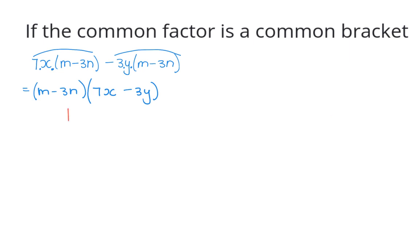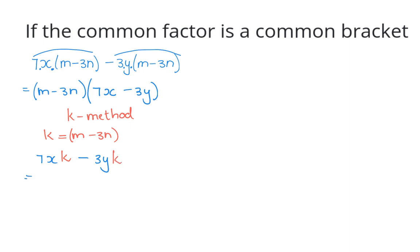Some people use the k method to simplify the work — they replace the bracket with the letter k. So k equals the bracket m minus 3n, and then you replace the bracket with k, giving 7x times k minus 3y times k. You can see that k is the common factor in each term, so you write k times 7x minus 3y. It is important that you replace k again with the bracket m minus 3n, giving m minus 3n times 7x minus 3y.